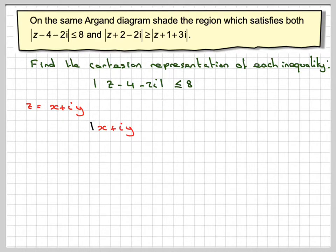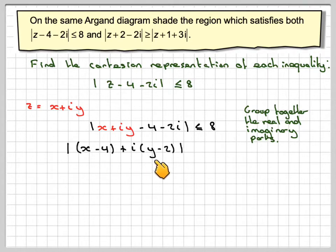We've got minus 4 minus 2i ≤ 8. The technique is to group together the real and imaginary parts, so the real bit is x - 4 and the imaginary part is y - 2. We've got |x - 4 + i(y - 2)| ≤ 8.